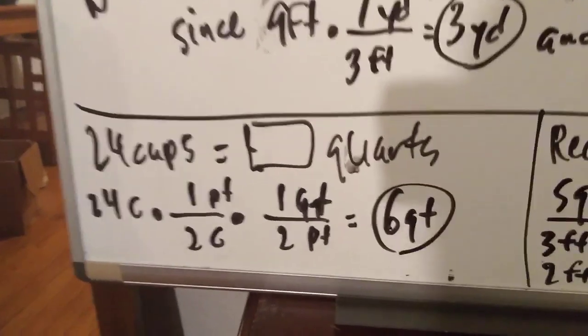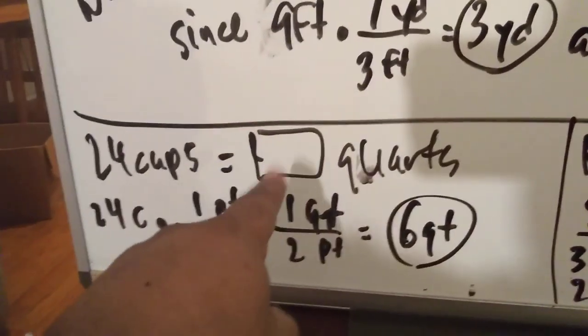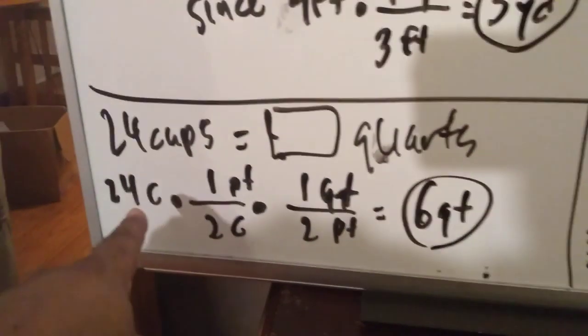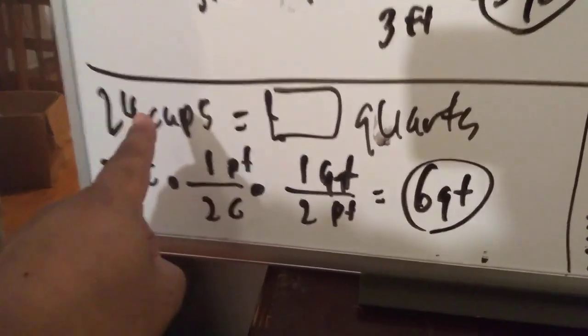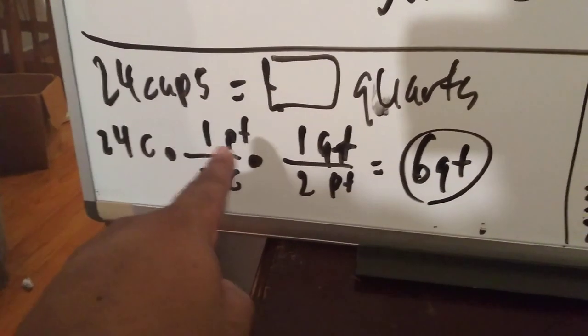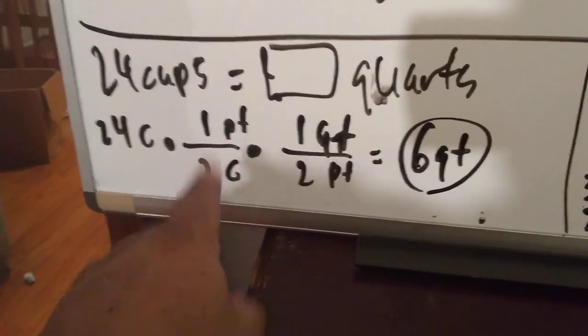This one is 24 cups equals how many quarts. We need to fill in what goes in this box right here. 24 cups is what they're giving you. You know that we can change cups to pints, and the cups gotta cancel.